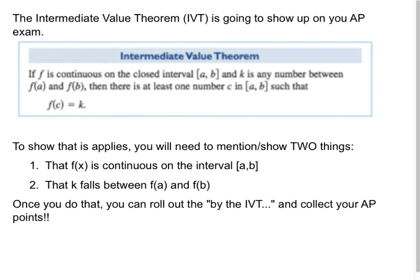And that k, whatever numerical value you're given, falls between the two outputs, f(a) and f(b). Once you've done that, you can just roll out the by the IVT and then collect your awesome AP points. So you have to demonstrate the IVT applies, and then you can just be like, yo, by the IVT. This is why.